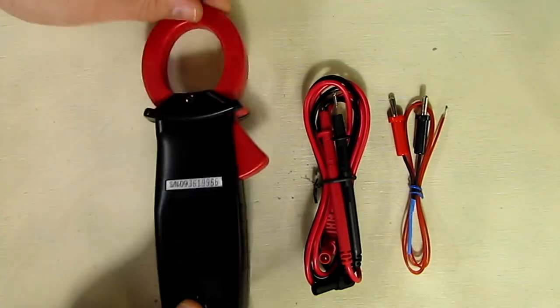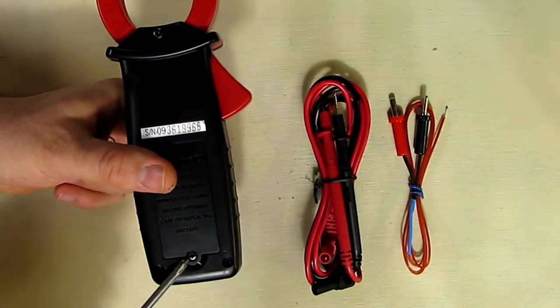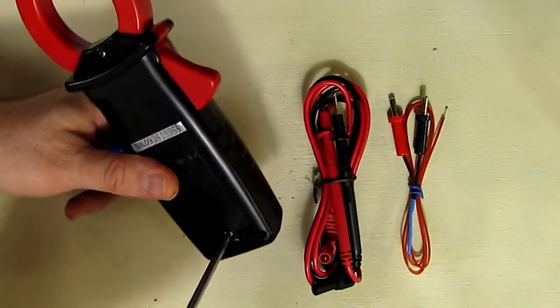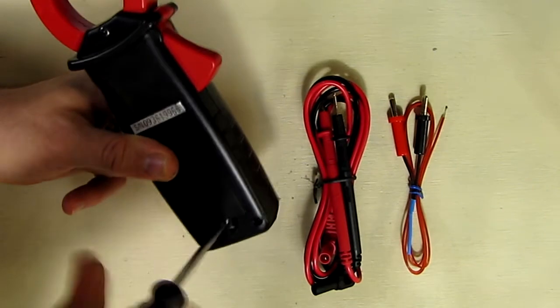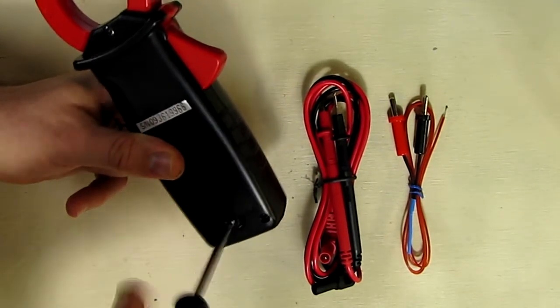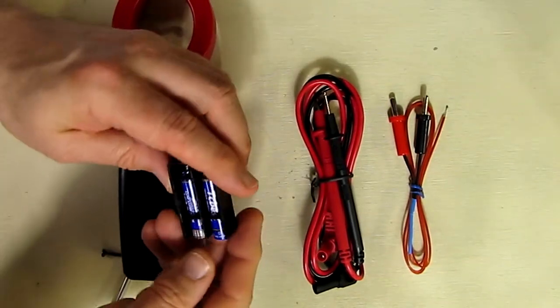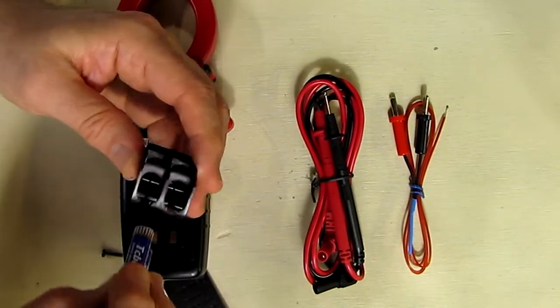So let's put the batteries in here and then give this thing a try. On the back of the unit to put the batteries in, you can see there's a Phillips head screw there and you have to remove that first to get to the battery compartment.